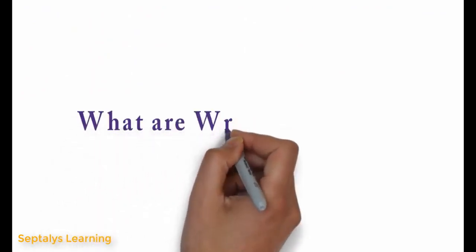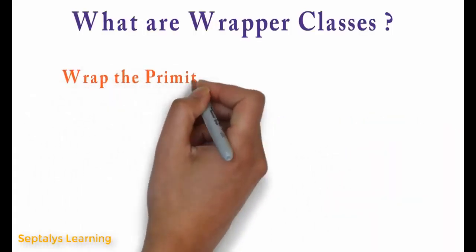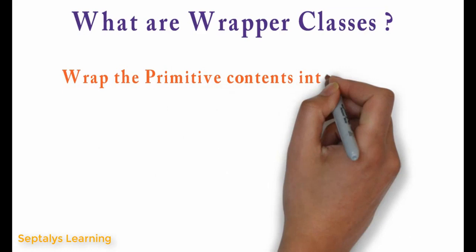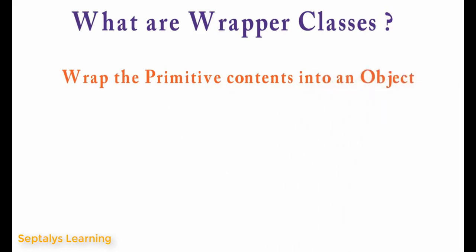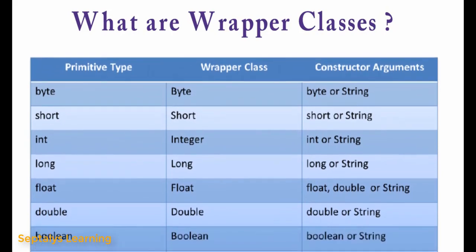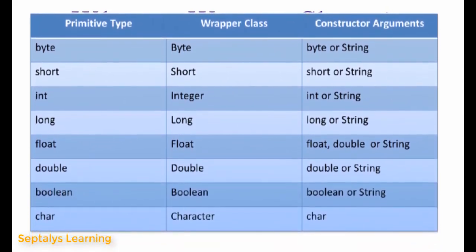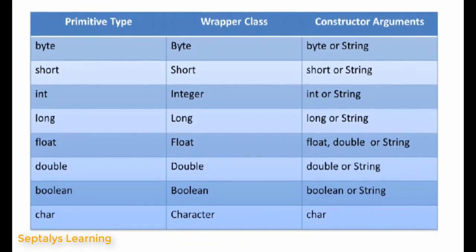What are wrapper classes? Wrapper classes are mainly used to wrap primitive contents into an object. For every primitive data type there is a wrapper class. There are 8 primitive types in Java, so there are 8 wrapper classes.